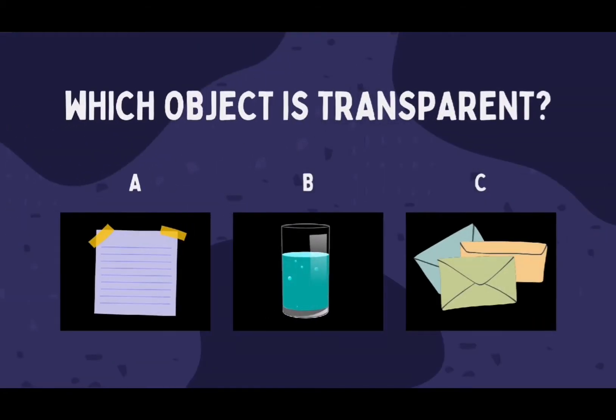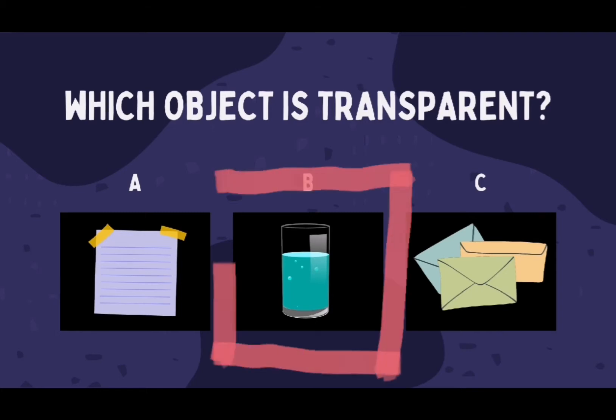Next, which object is a transparent material? A. A piece of paper, B. Glass, C. Colored envelopes. The answer is B. Glass.